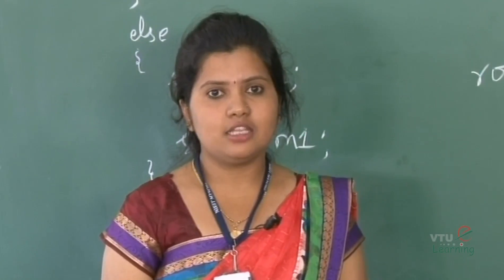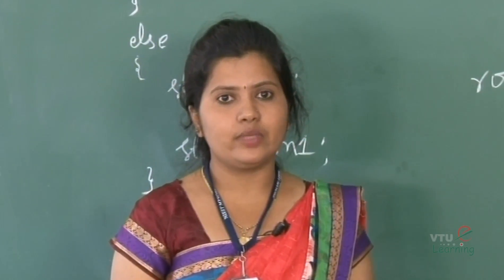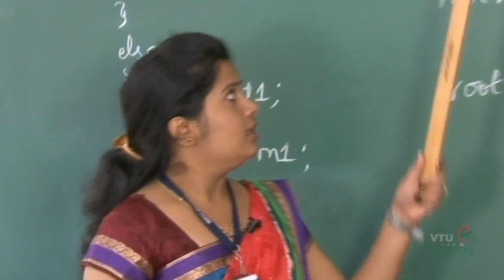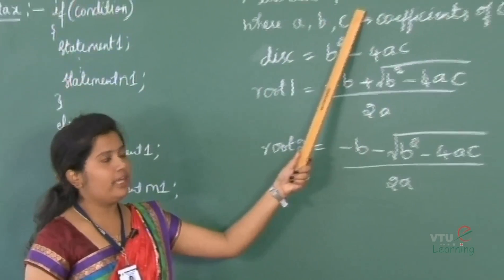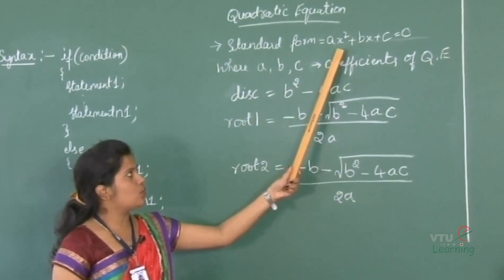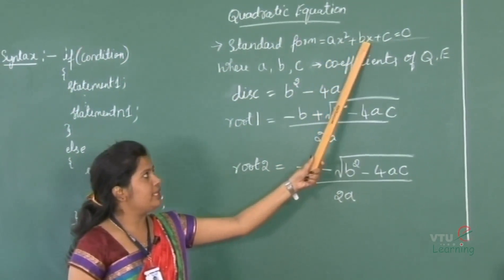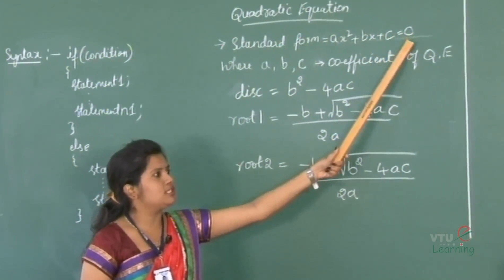Now, let's start the program of a quadratic equation. The purpose of this program is to demonstrate if and if-else conditional control constructs. Let's discuss the logic of a quadratic equation. The standard form of a quadratic equation is Ax squared plus Bx plus C is equal to 0.